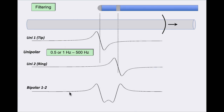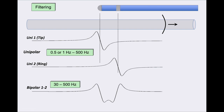For the bipolar electrogram, you do want to get rid of low-frequency signals because far-field signals are low-frequency signals. Even though using 30 hertz eliminates far-field signals, it may add additional components to the electrogram — but that is less critical because, as we will see further into this talk, we always use the unipolar electrograms to select our activation times. So typically for bipolar electrograms, we often use 30 to 500 hertz. We will continue with the bipolar electrogram in part two.